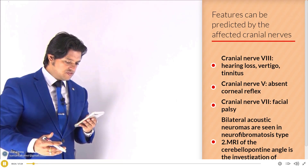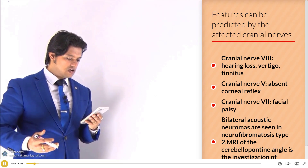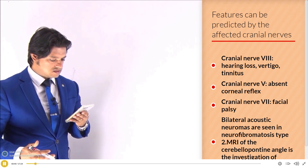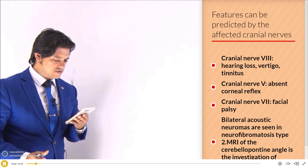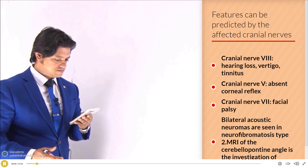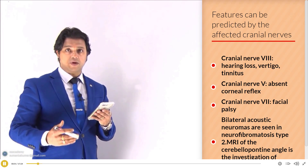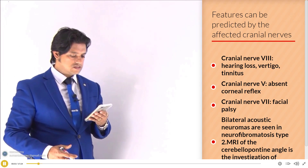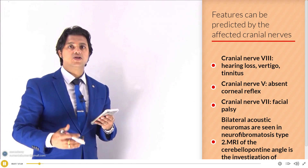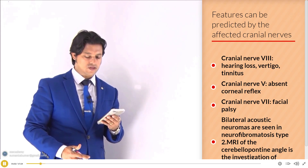Features can be predicted by the affected cranial nerves. Cranial nerve 8 causes hearing loss, vertigo, and tinnitus. Cranial nerve 5 causes absent corneal reflex, and cranial nerve 7 causes facial palsy. Bilateral acoustic neuromas are seen in neurofibromatosis type 2. Bilateral schwannoma is a diagnosis of neurofibromatosis NF type 2, as we discussed in the neurofibromatosis video.